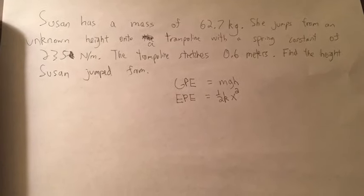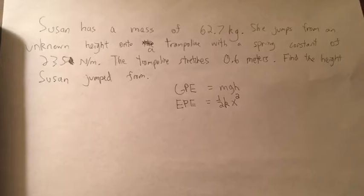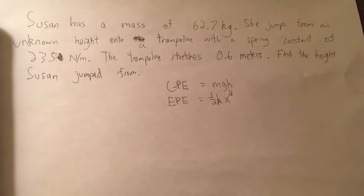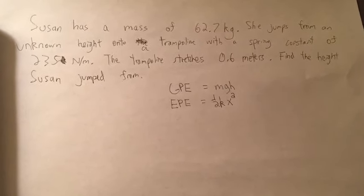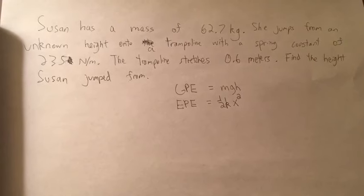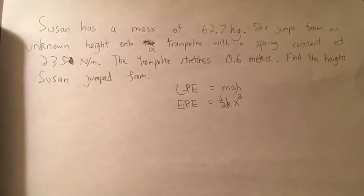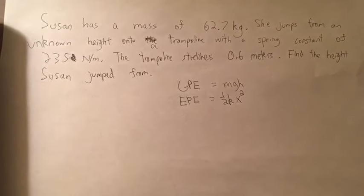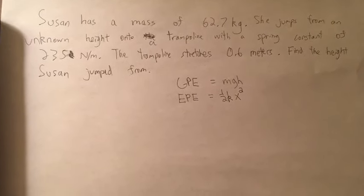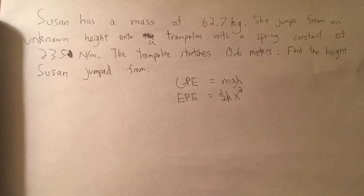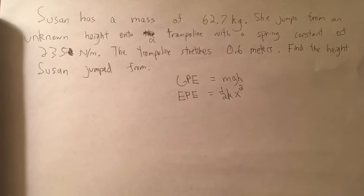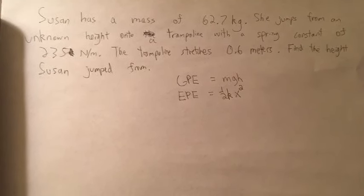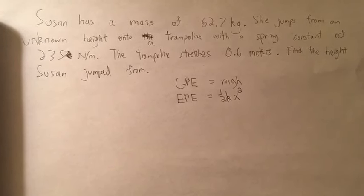Hi, my good friend Susan, who you may know from Susan on a Swing, has a problem for me. She has a mass of 62.7 kilograms. She jumps from an unknown height onto a trampoline with a spring constant of 235 newtons per meter. The trampoline stretches 0.6 meters as she jumps down on it.